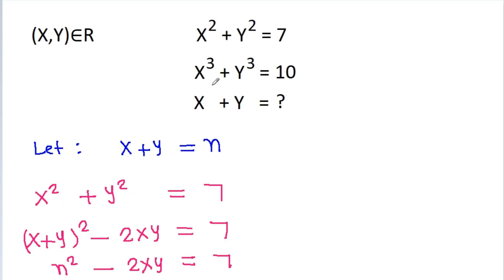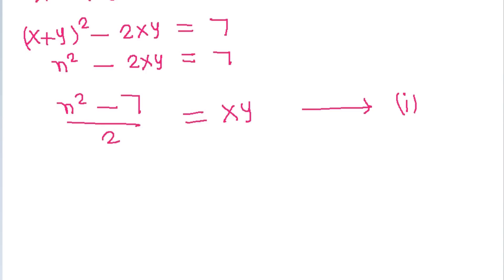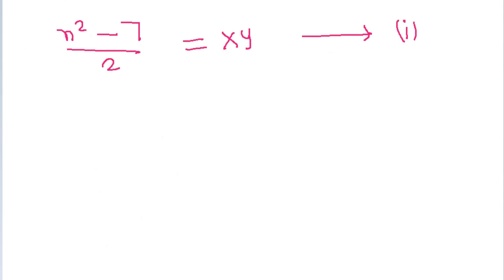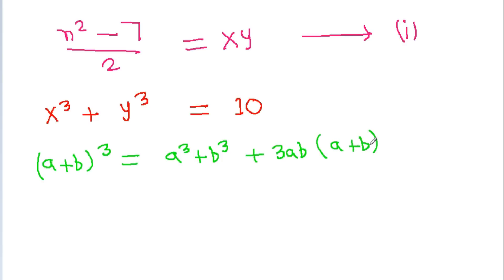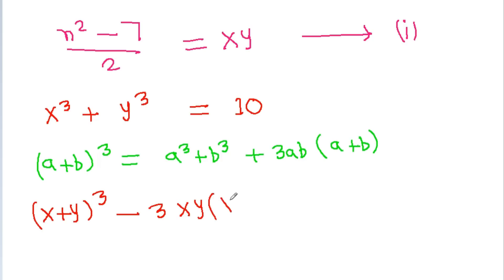We have x cubed plus y cubed equal to 10. We know that a cubed plus b cubed equals (a plus b) cubed minus 3ab(a plus b). So x cubed plus y cubed becomes (x plus y) cubed minus 3xy(x plus y), which equals 10.